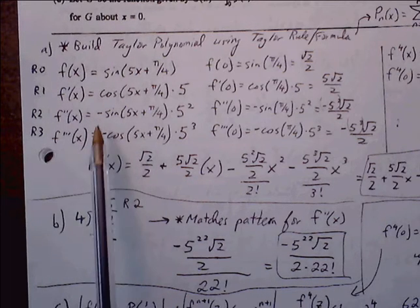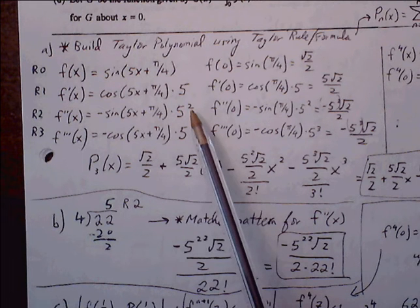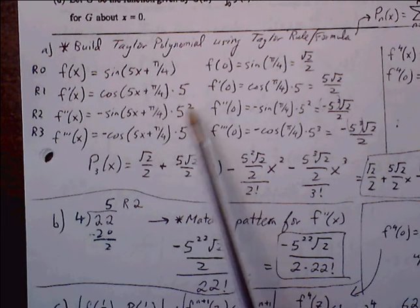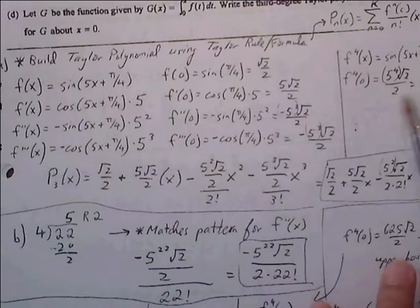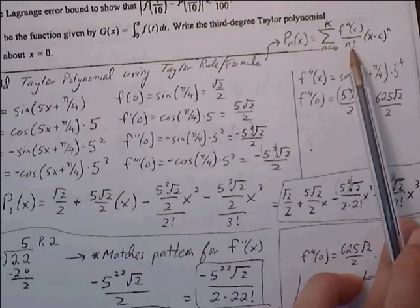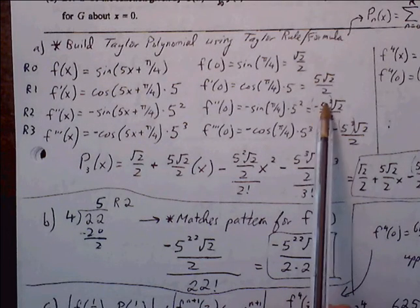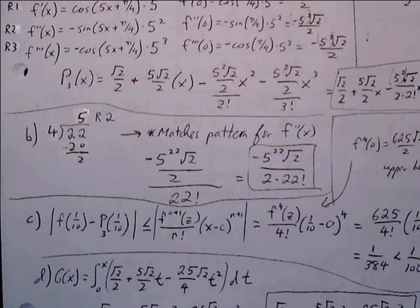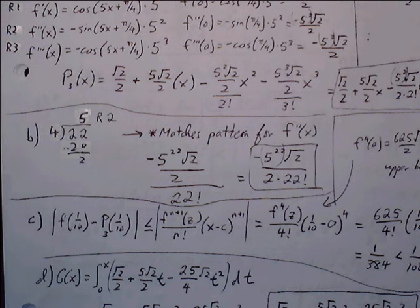Because we're going all the way down to the 22nd derivative, we accumulate 5 to the 22nd as a factor. Also, in the Taylor series we divide by n factorial, so we divide by 22 factorial. The coefficient is therefore: −5²² · (√2/2) / 22! which simplifies to −5²² · √2 / (2 · 22!).